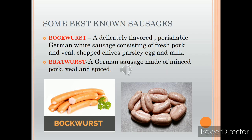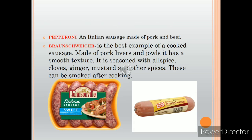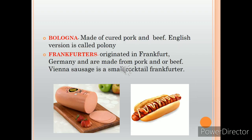Now we will talk about some of the best known sausages from the world. Bockwurst is a German white sausage made from pork and veal. Bratwurst is a German sausage made from minced pork and veal, and then it is spiced. Germany is very famous for sausages — most of the world-famous sausages are from Germany. Pepperoni is an Italian sausage made from pork and beef. Liverwurst is a cooked sausage made from pork, liver and jowl fat, seasoned with allspice, cloves, ginger, mustard and other spices, and generally smoked after cooking — cooked meat is put inside the casing and then smoked.